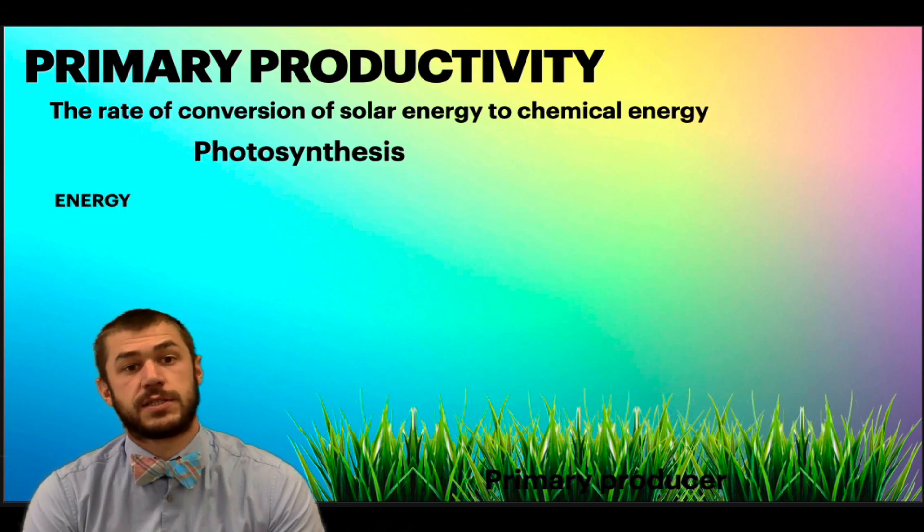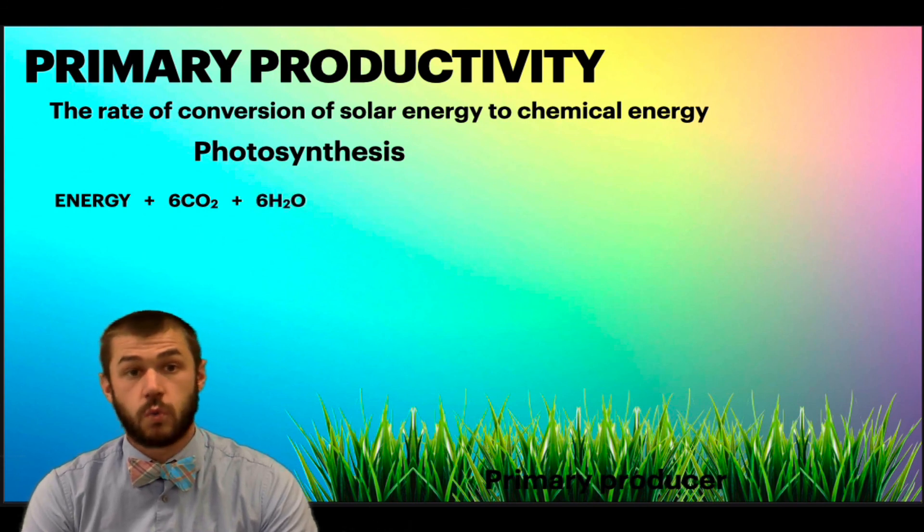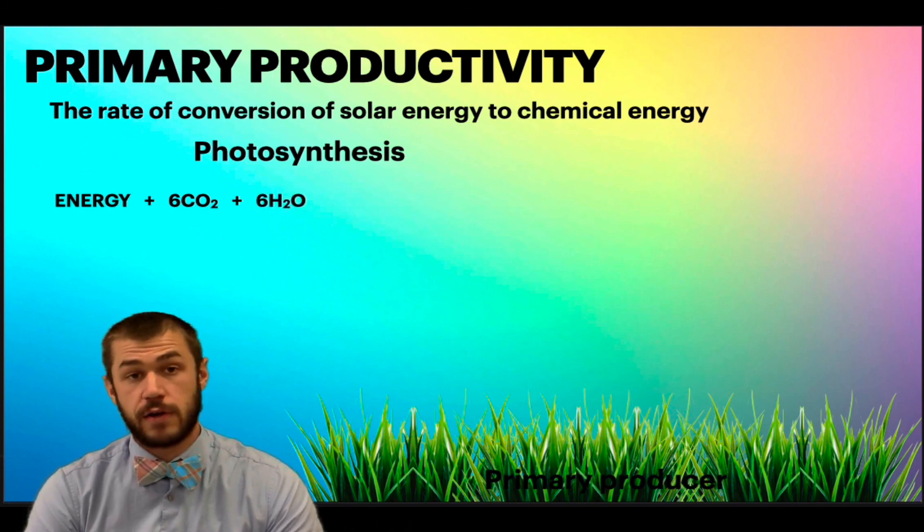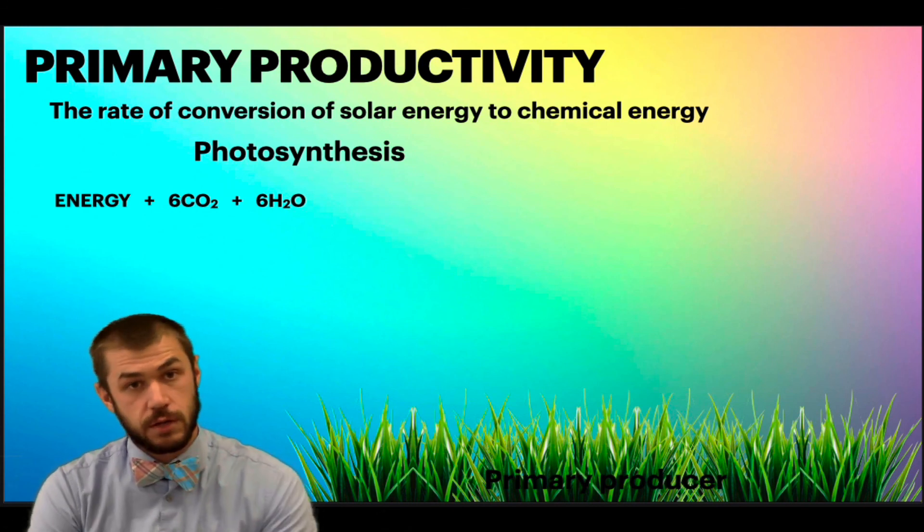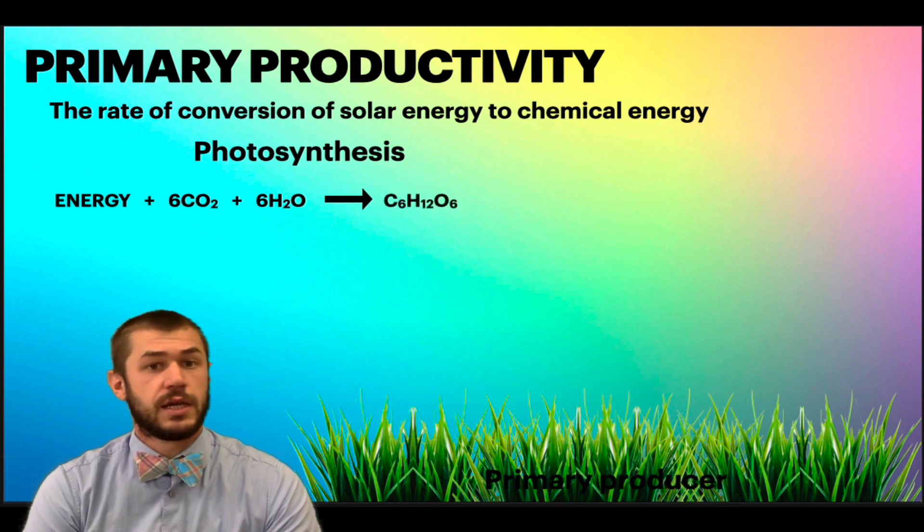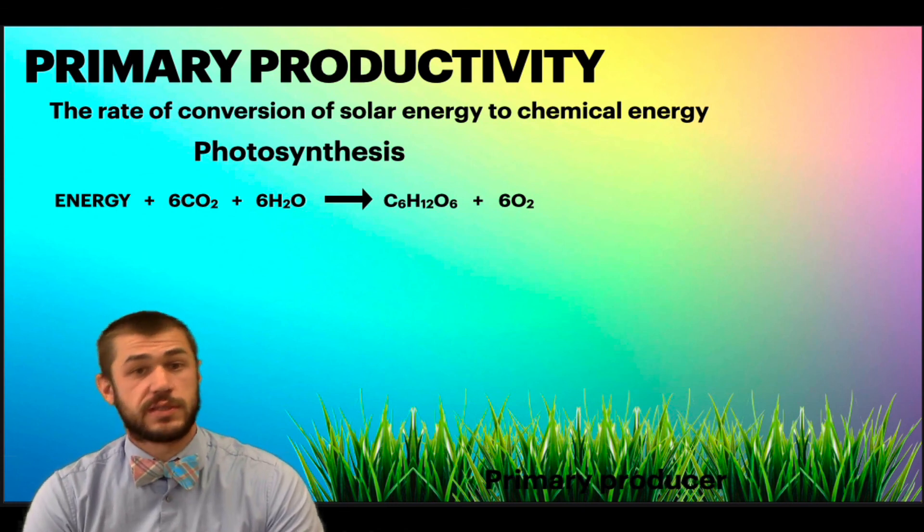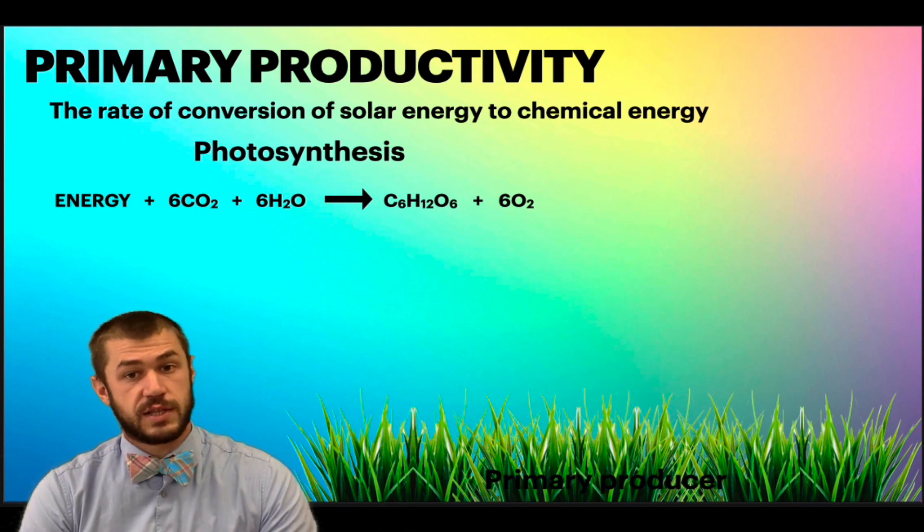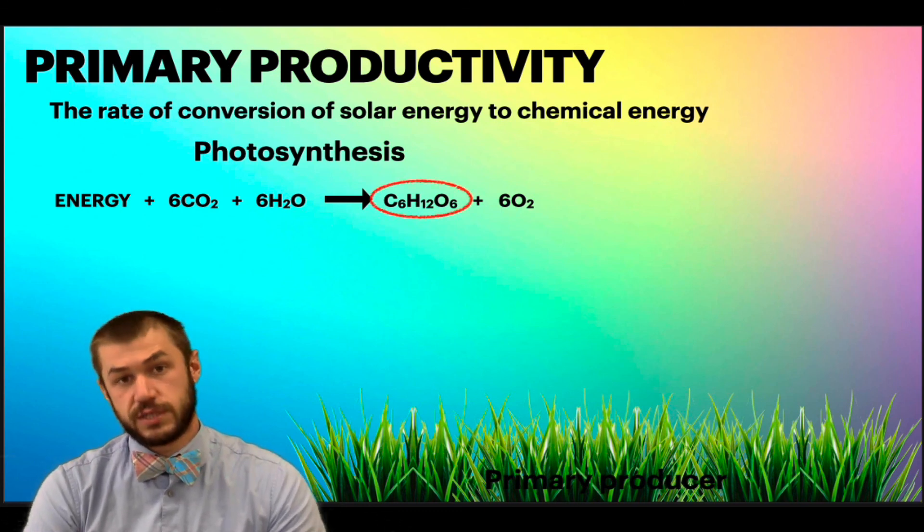So if we look at the chemical equation for photosynthesis, we're going to start with energy, and that's energy from the sun. We're also going to need carbon dioxide, which comes from the atmosphere, and water, which is going to come from either the ground or in some cases is also absorbed as water vapor from the atmosphere. But typically it's going to come from the roots. That's then transformed through the process of photosynthesis into sugar and oxygen. So the oxygen we breathe is coming from those plants. The sugars and starches that those plants make are what's transferred up as chemical energy through the system.